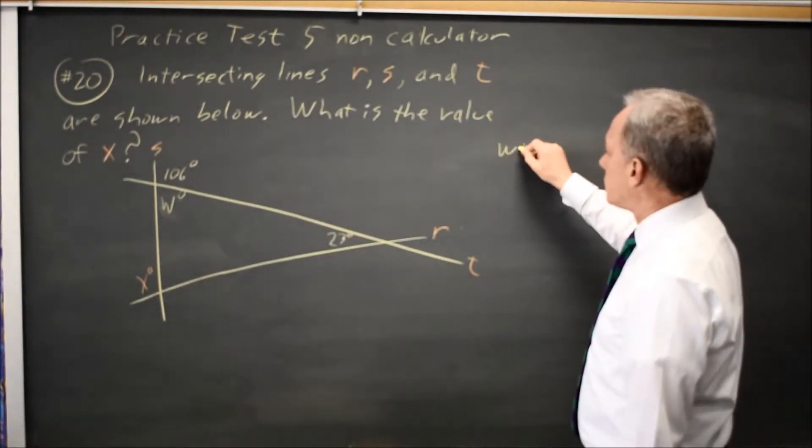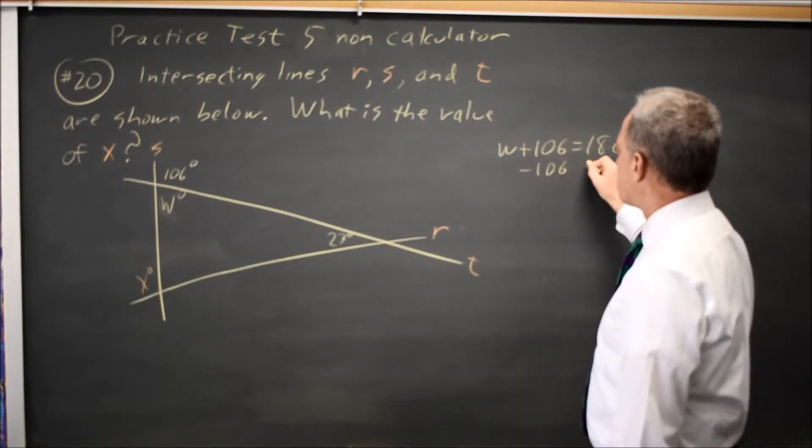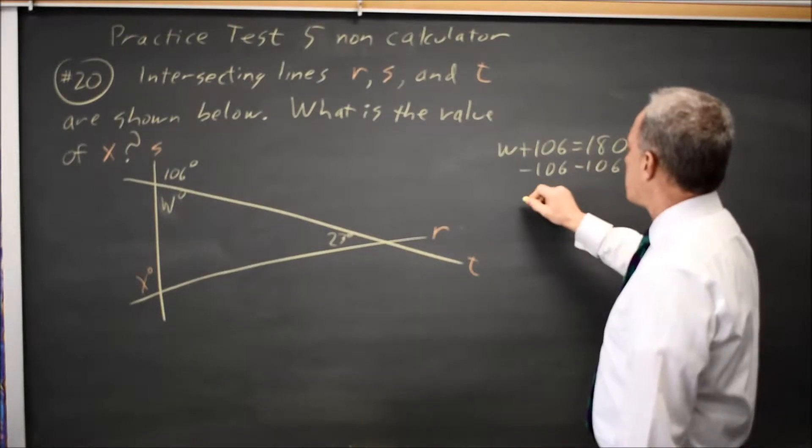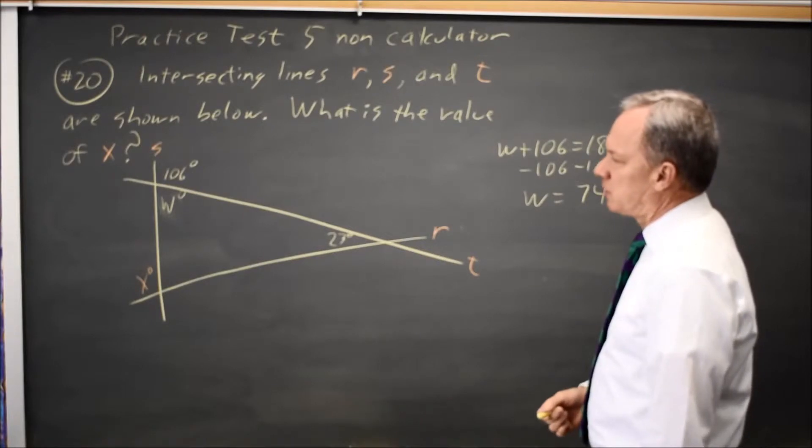So W plus 106 equals 180. Subtract 106 from both sides, and I get W equals 74 degrees.